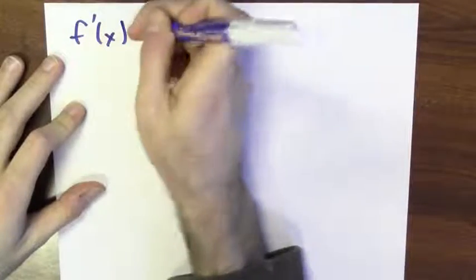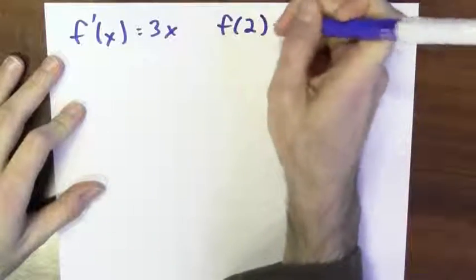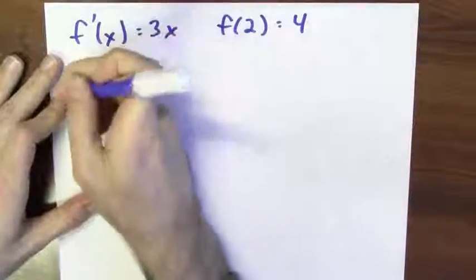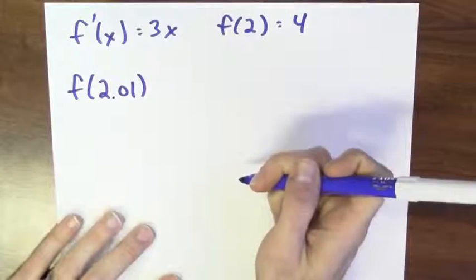Suppose that I've got some function f and all I know is that its derivative is 3x and its value at 2 is 4. Just knowing this information, without a rule for the function at this point, can I say anything about the function's value at, say, 2.01?